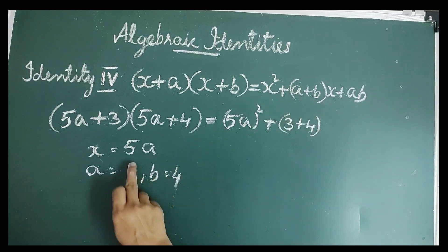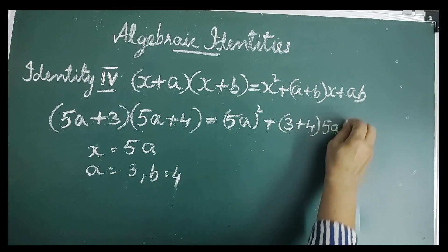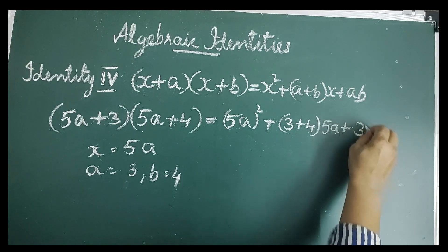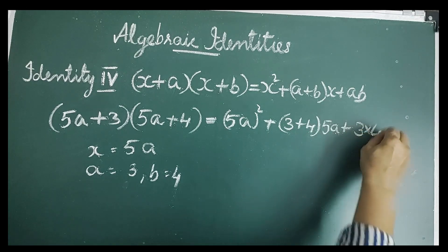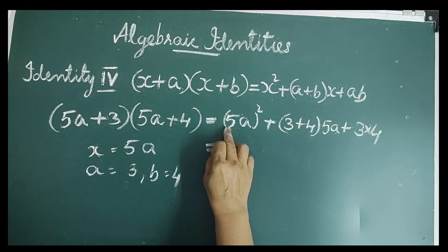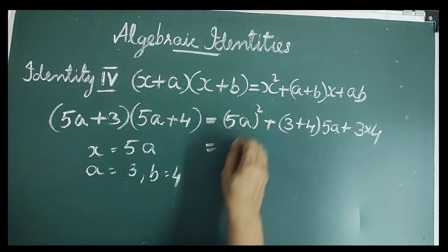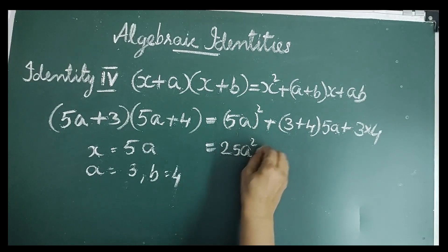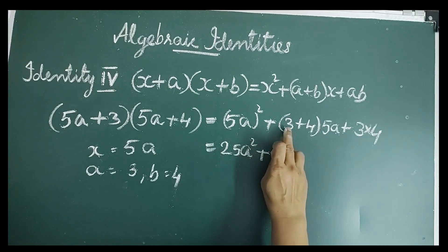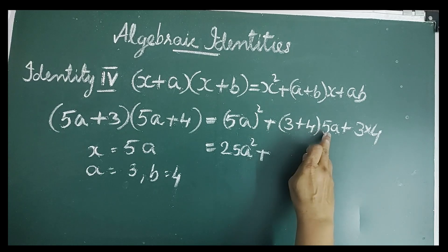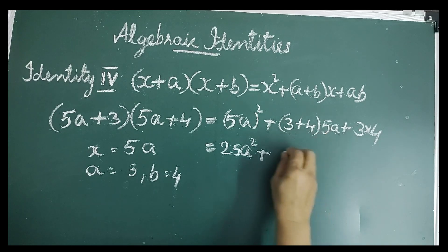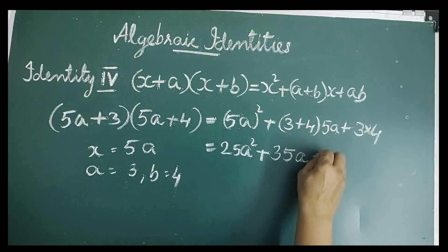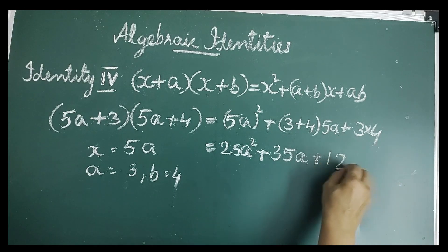Continuing: plus ab = 3 × 4. That equals (5a)² = 25a², plus 7 × 5a = 35a, plus 3 × 4 = 12. So the result is 25a² + 35a + 12.